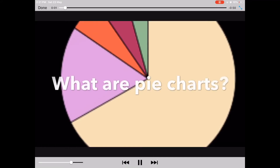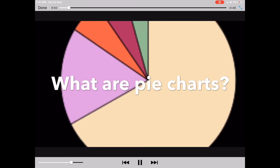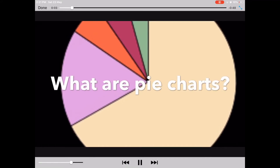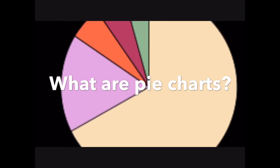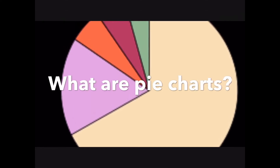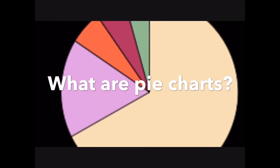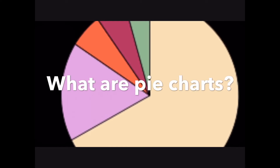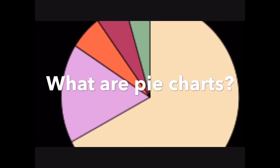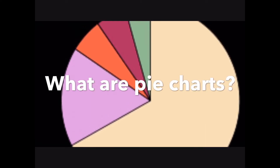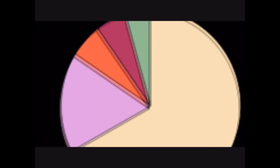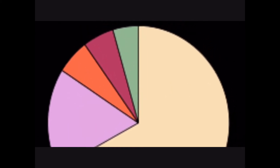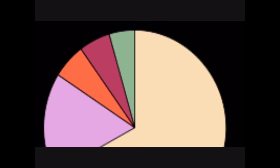Hello everybody and welcome back. Today we're going to be talking about pie charts. A pie chart is divided into pieces of numerical proportion. There's a subject for every pie chart you see, such as how many people like watermelons.